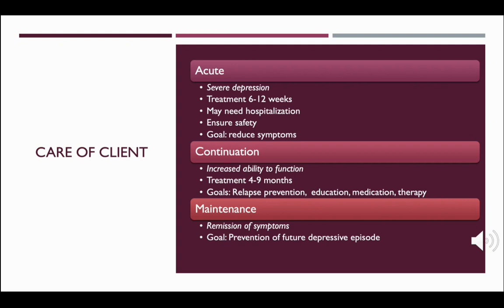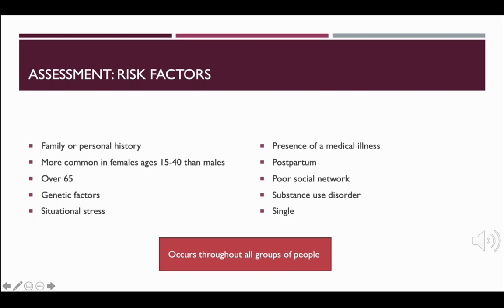When caring for a client with depression, as a nurse you will assess the patient for risk factors. These may include a family or personal history of depression. Depressive disorders are twice as common in females between the ages of 15 and 40 than in males, and very common among clients over the age of 65 — common but not normal. It's important to differentiate between early dementia and depressive signs and symptoms. Neurotransmitter deficiencies or genetic factors are risk factors — for example, a serotonin deficiency affects mood, sexual behavior, sleep cycles, hunger, and pain perception. Norepinephrine deficiency can affect attention and behavior, and those are both risk factors for depression.